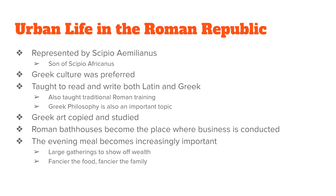Unlike Marcus Cato, where lunch was the most important meal, for Scipio Aemilianus and his friends, dinner was actually the most important meal. It was a chance to show off how much money you had and how wealthy your family was.